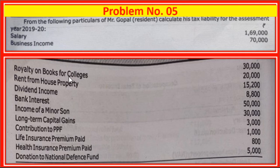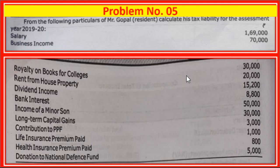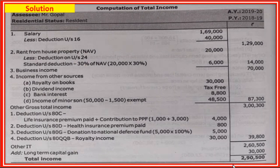Next, royalty income - under section 80QQB, royalty income deduction is applicable. Royalty income 30,000; the maximum limit is 3,00,000. So 30,000 is fully deductible. Total deductions: 4,000 plus 800 plus 5,000 plus 30,000 equals 39,800. Less from gross total income: 3,31,100 minus 39,800 equals balance other total income: 2,60,500. Add back long term capital gain: 30,000.